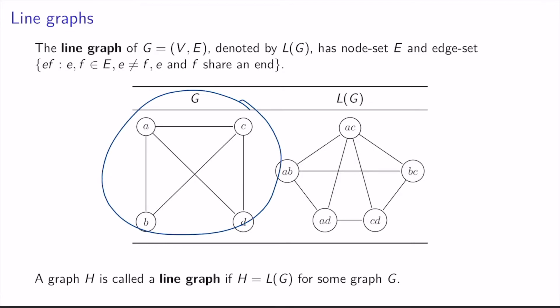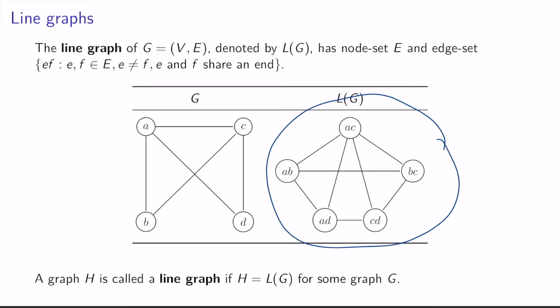For this graph G, its line graph is shown here. Every edge in G is a node in the line graph. G has five edges: AB, AC, AD, BC, and CD. And as we can see, we have the corresponding nodes AB, AC, AD, BC, and CD in the line graph.